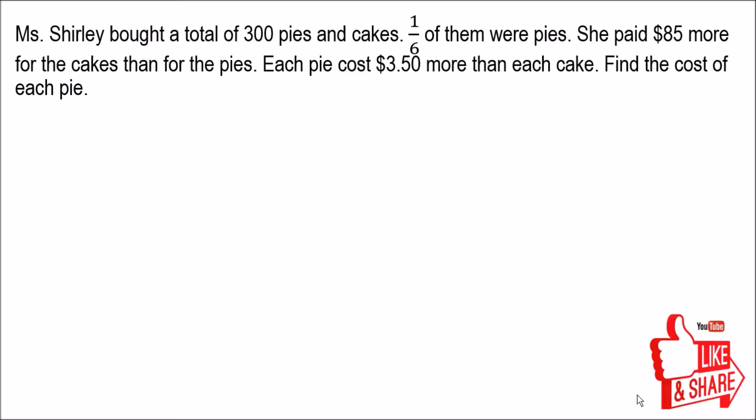Welcome to my video. This is a P5 math question. Miss Shirley bought a total of 300 pies and cakes. One sixth of them were pies. She paid $85 more for the cakes than for the pies. Each pie cost $3.50 more than each cake. Find the cost of each pie.